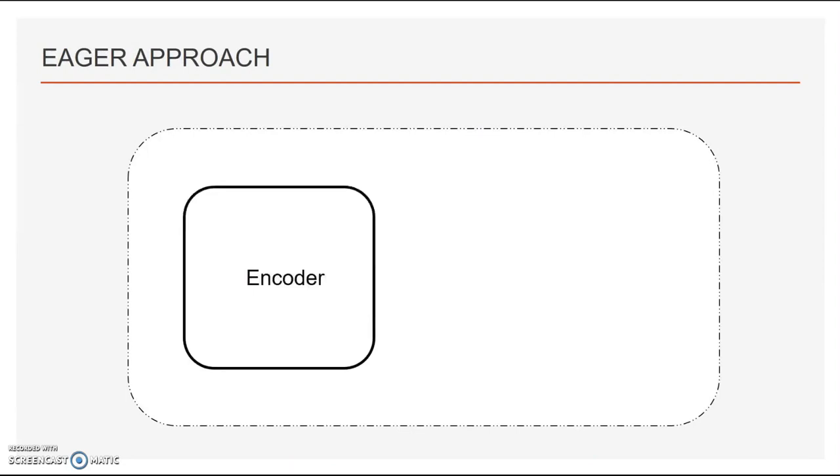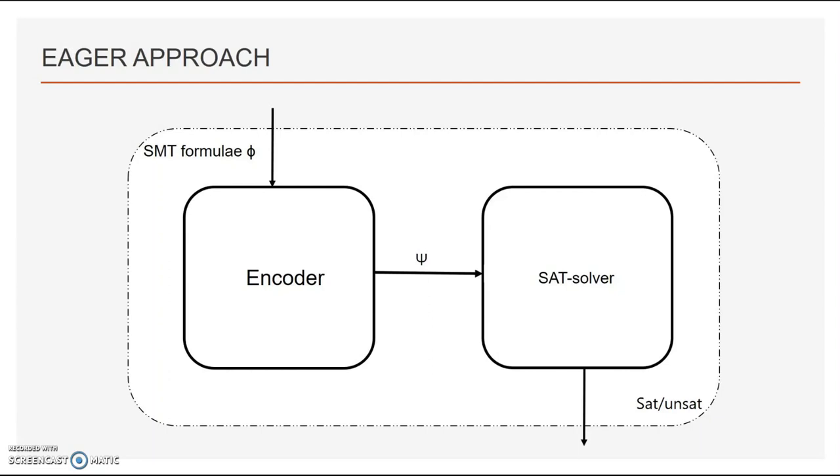In eager approach, we have a solver which consists of encoder and SAT solver. We pass in the SMT formula to encoder and encoder converts everything including incompatibilities between the T atoms and produces SAT solver formula in CNF form. In turn, SAT solver says whether the formula is satisfiable or unsatisfiable. This approach is slow and therefore we use lazy approach.